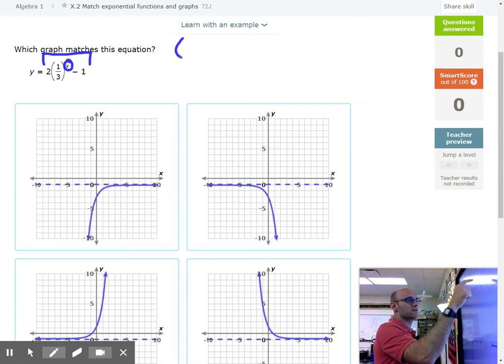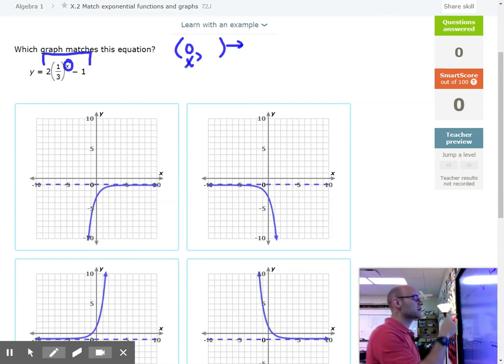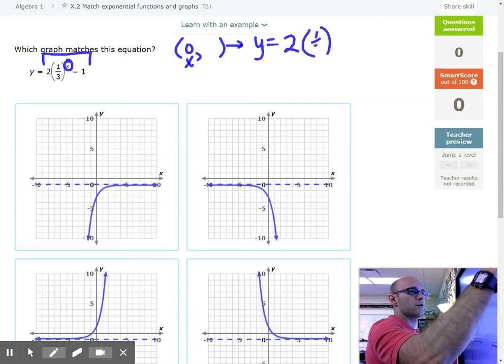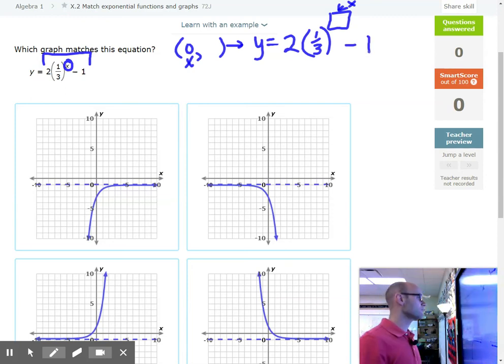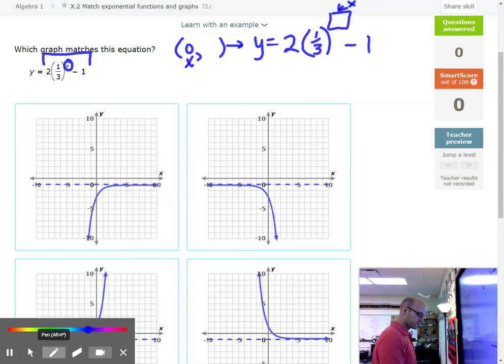Let's try an example. Here we go. Let's say we plugged in zero. So to plug in a number, we literally just write down what number we're plugging in. We recopy the equation. So Y equals 2 times 1 third to the X. Okay, that's where X is. I'm just going to draw a little arrow and put an X here, minus 1.